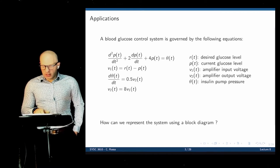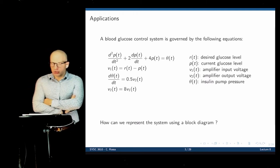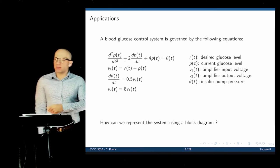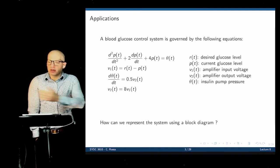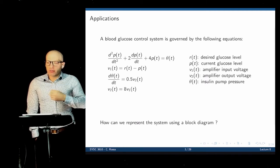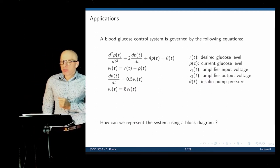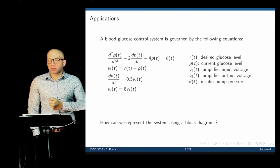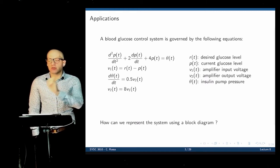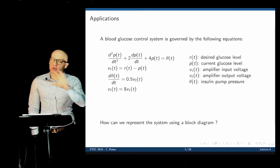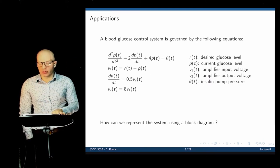Here is an example: a blood glucose control system described by a set of differential equations. In these equations, we have many different elements — the desired glucose level, the current glucose level, the internal amplifier input voltages, and an insulin pump pressure. These amplifiers are controlling the pump, which injects a certain dose to regulate the glucose level. The question is how to go from individual equations to a single block diagram that visually represents how these pieces are connected.